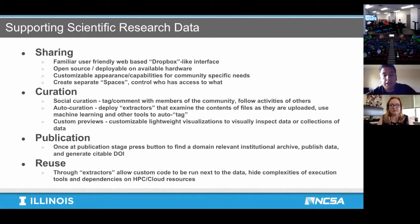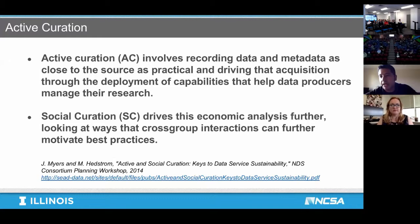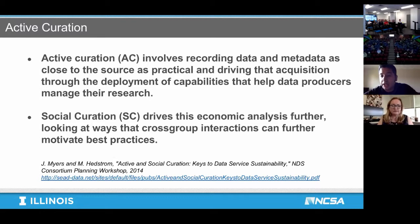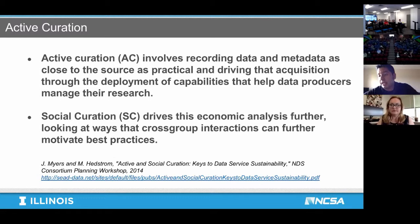The main concept is called active curation. When you're sharing and publishing data for science, you have to provide metadata. The way this is typically done is at the end of the day, when you're done with your data and have published a paper, you upload it to some archive and begin assigning metadata — tagging features, mentioning authors, where it came from. That's a tedious process, and many scientists don't do it. It's boring, it doesn't lead to tenure, and it's often avoided, which hinders the ability to get data out there.